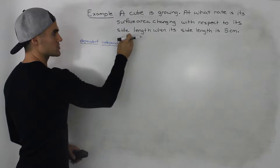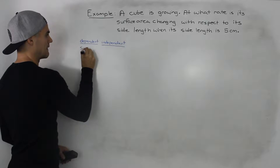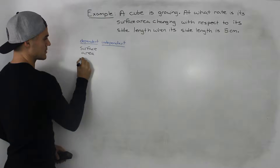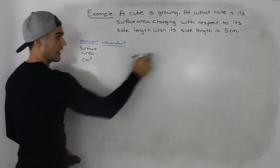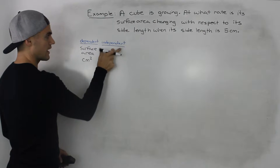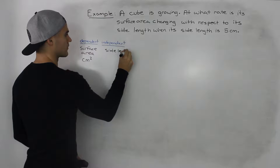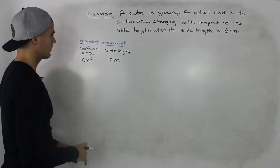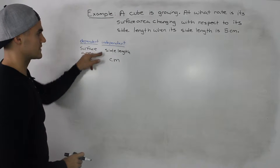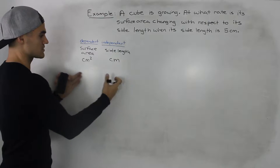Surface area is changing with respect to its side length, so the surface area of the cube is the dependent variable and that's going to be measured in centimeters squared. Area is always squared and the units we're working with are centimeters. The independent variable is the side length of the cube, which is measured in centimeters. Now, how can we relate the surface area and side length of a cube in an equation?